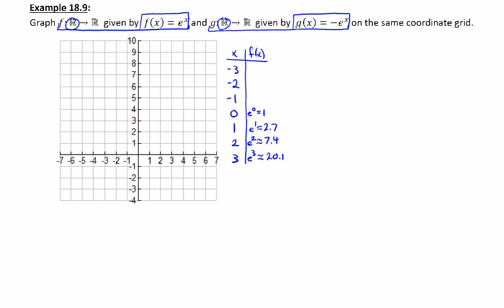Now I won't be able to fit that last point on this particular window, but I could go ahead and plot 0, 1, then 1, 2.7, and then 2, 7.4. Those can all go on here pretty easily.